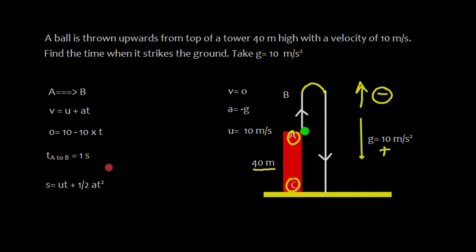Now let us find the distance using the equation s = ut + ½at². From A to B, u = 10 m/s and t = 1 second. We use minus because acceleration due to gravity is in the opposite direction: s = 10(1) - ½(10)(1)² = 10 - 5 = 5 meters. So the distance from A to B is 5 meters.